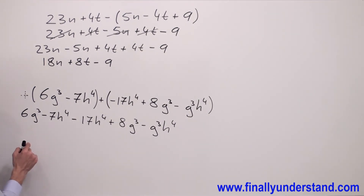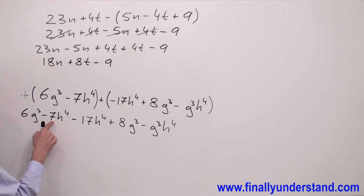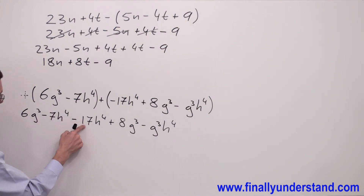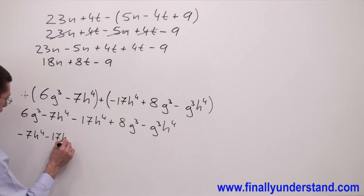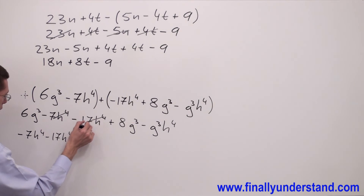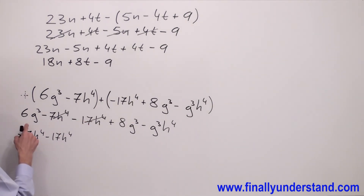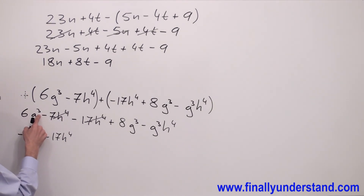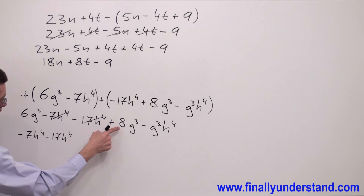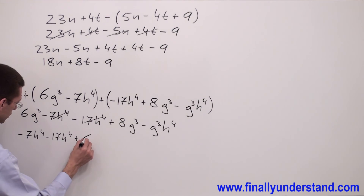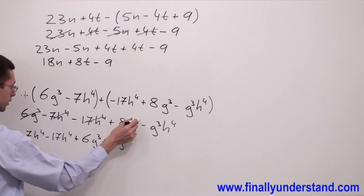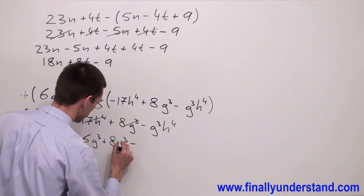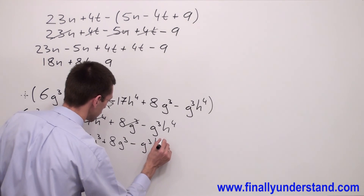Next, I'm going to organize the like terms, starting with the highest exponents next to the variables. I have minus 7h to the fourth and minus 17h to the fourth. Then I have 6g to the third plus 8g to the third. And what's left is negative g to the third h to the fourth.